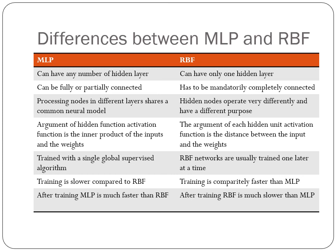The argument of hidden function activation is the inner product of inputs and weights in MLP. But in this case, it is the distance between the inputs and weights. Trained with a single global supervised learning algorithm, but here RBF are usually trained one layer at a time. Clustering is used in the case of your radial basis functions in the hidden layer. The output layer uses your weighted average function. Training is slower when compared to RBF in the case of MLP. And after training, MLP is much faster than RBF. But after training, RBF is very much slower than MLP.